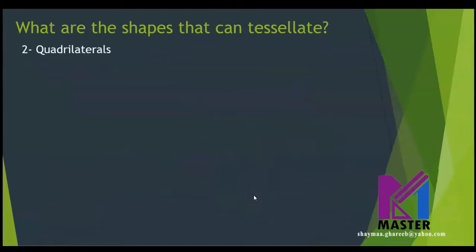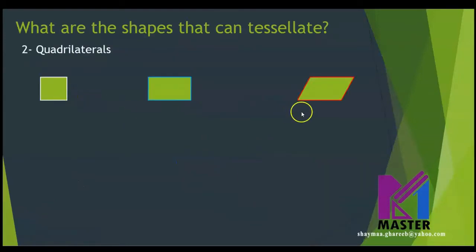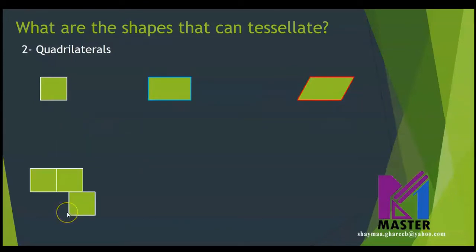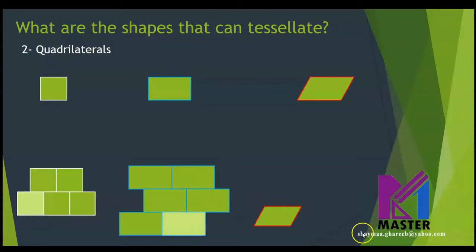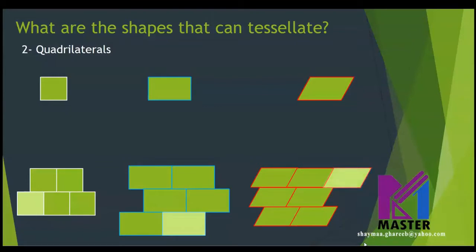Now let's check quadrilaterals. We have three quadrilaterals here: square, rectangle, and a parallelogram. Starting with the square — as you can see, no gaps or overlaps, so it can tessellate. The rectangle, we said before, it can tessellate. The parallelogram — let's check it and see. As you can see, no gaps or overlaps. So the square, the rectangle, and the parallelogram can tessellate.